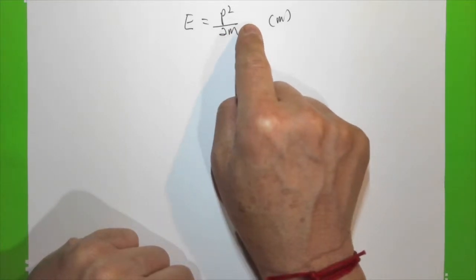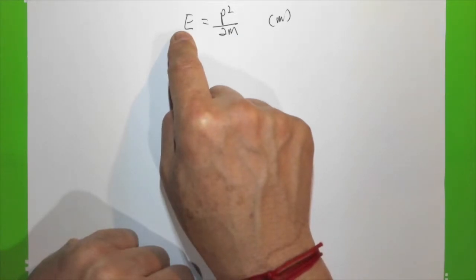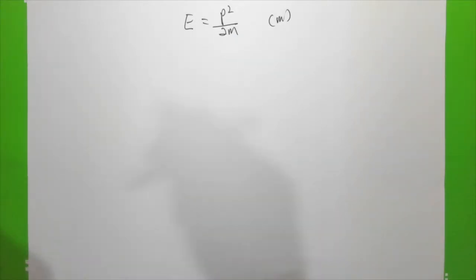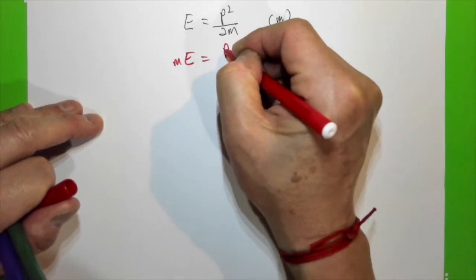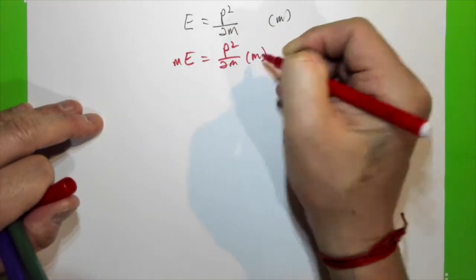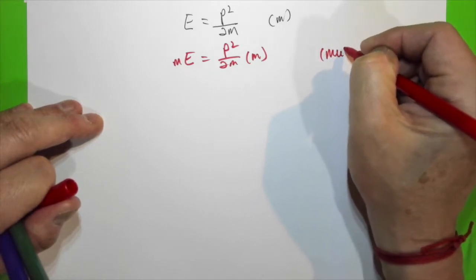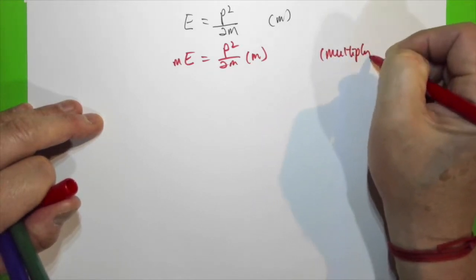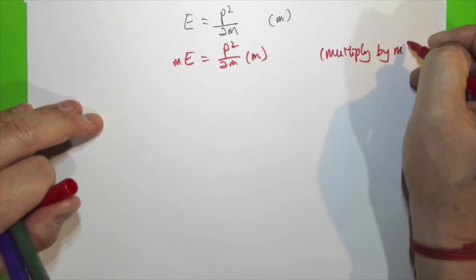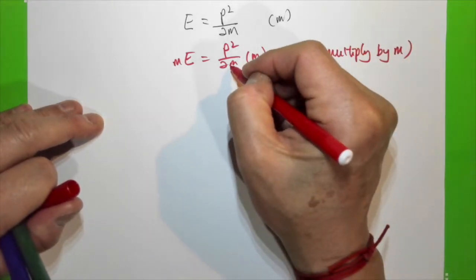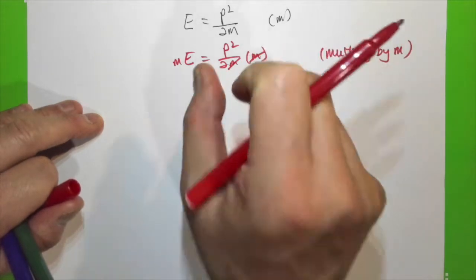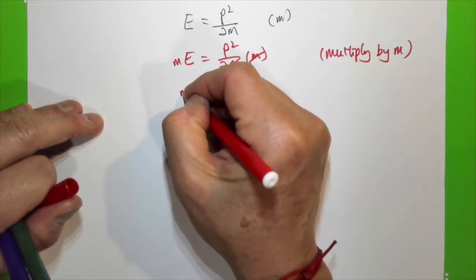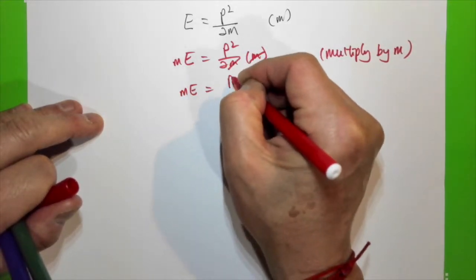So I will multiply both sides by m. We have m·E = p² over 2m times m, and by multiplying by m I can eliminate m from the right-hand side. We now have mE = p² over 2.